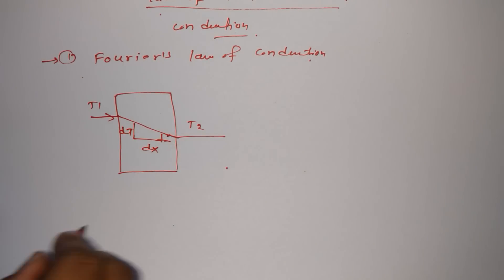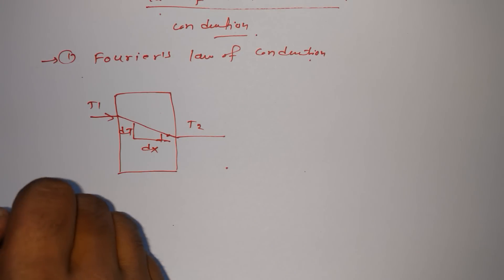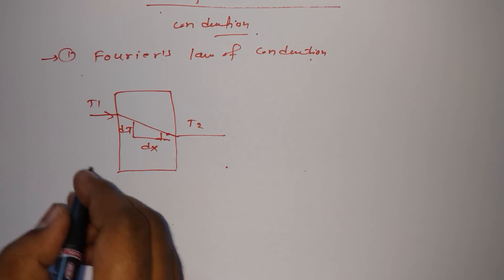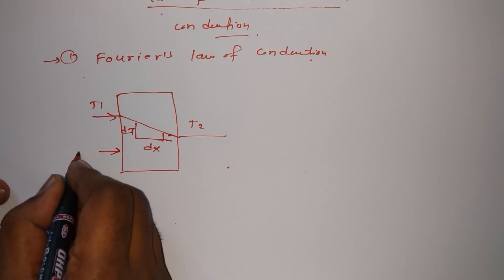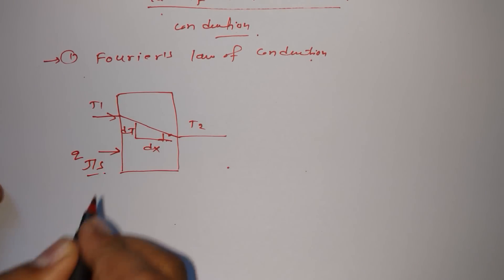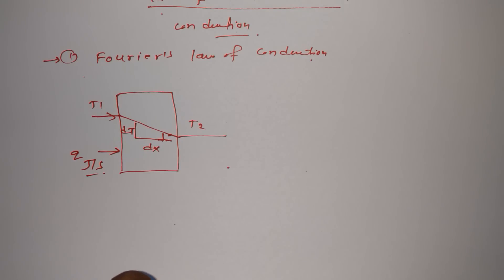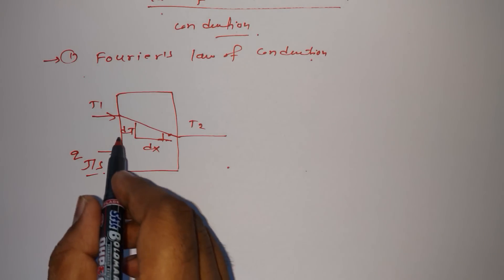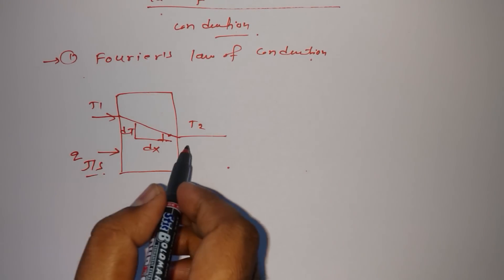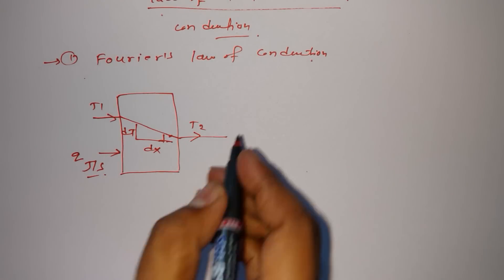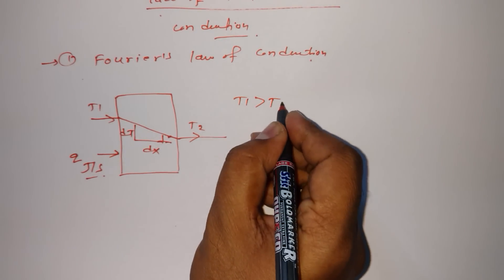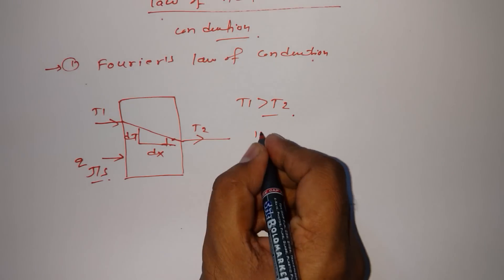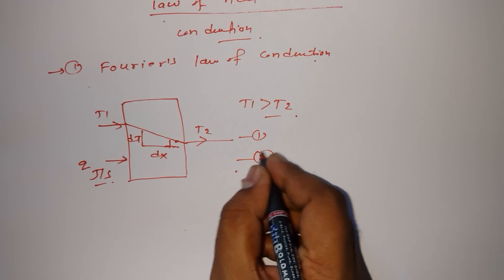The temperature difference is dT. Here we have heat in joules per second transferring from here to here. This is happening because of the temperature difference, because T1 is greater than T2. According to this law, there are two things this law covers.